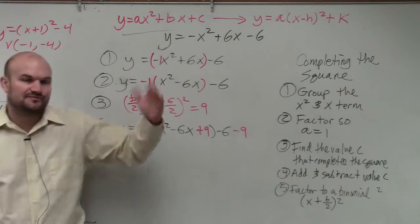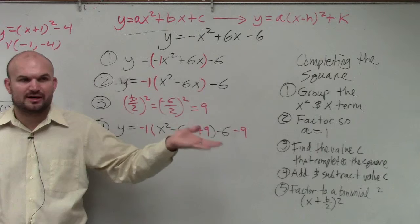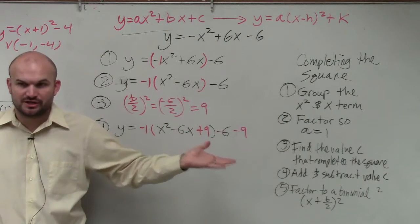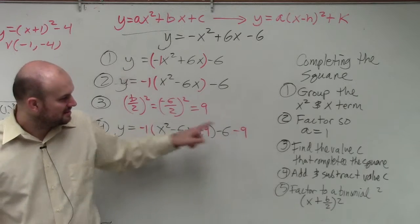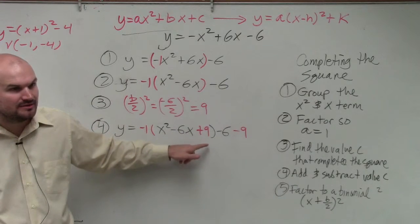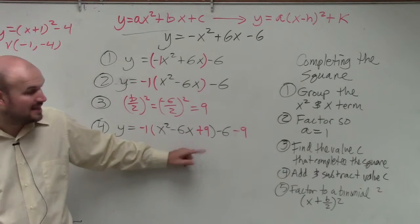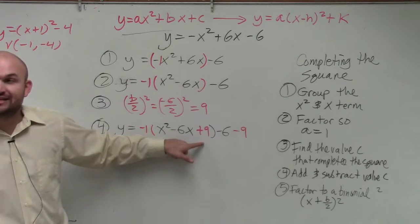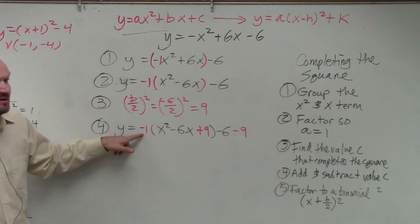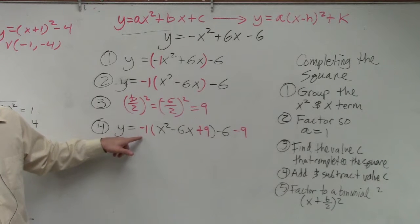Now, remember when I said, if you add and subtract on the same side, you keep the equation equivalent, right? I'm not adding a 9 right here. I'm not. I'm adding a 9 that technically, via distributive property, is going to be multiplied by a negative 1. You guys see that? This 9 is inside the parentheses.